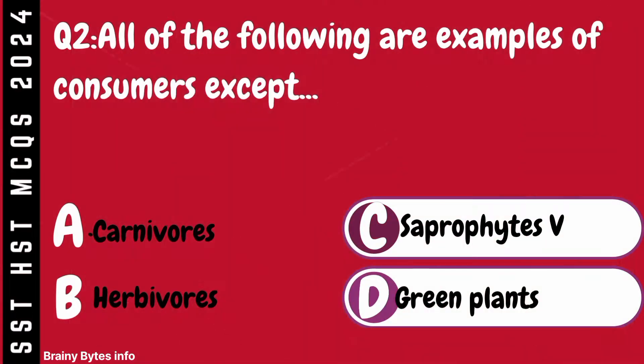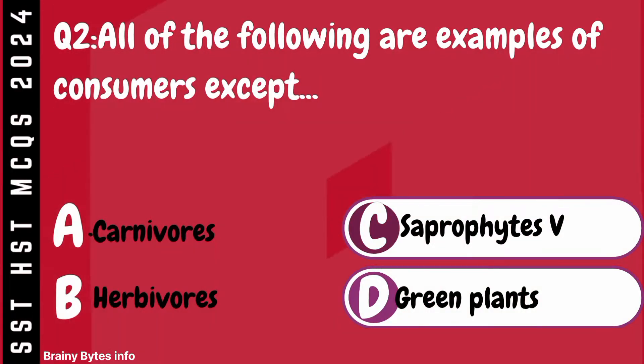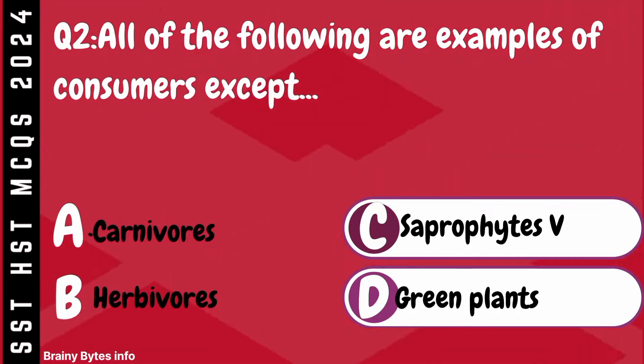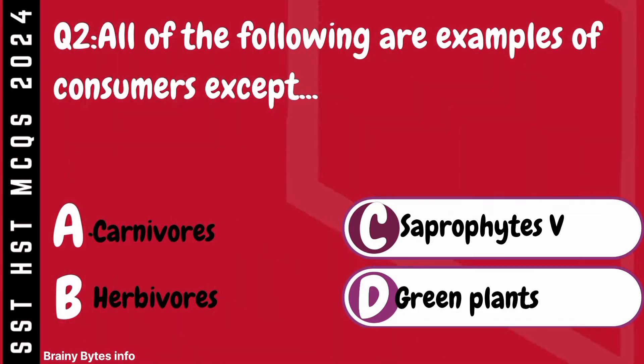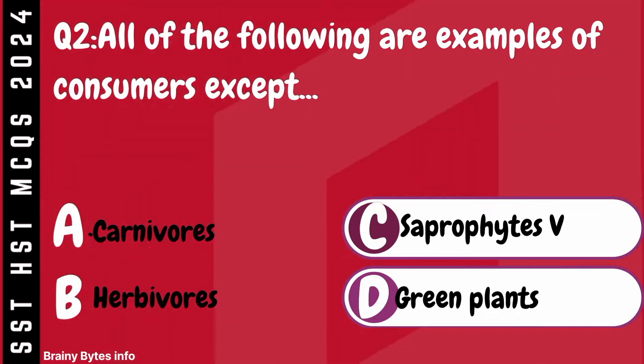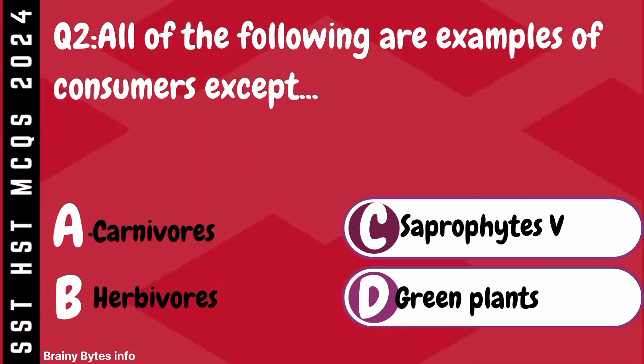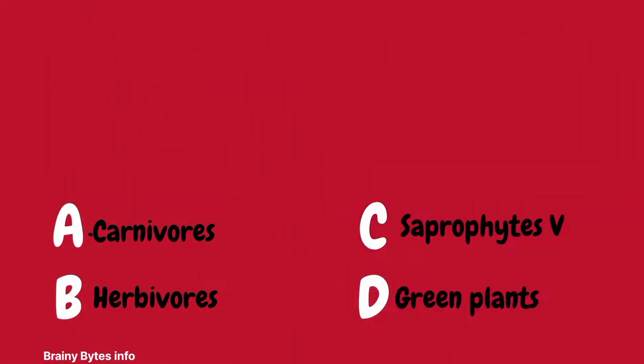Question 2. All of the following are examples of consumers except. A. Carnivores. B. Herbivores. C. Saprophytes. D. Green plants.